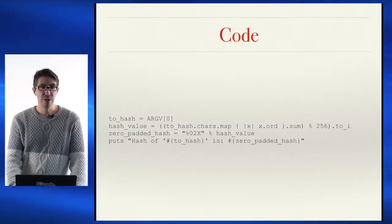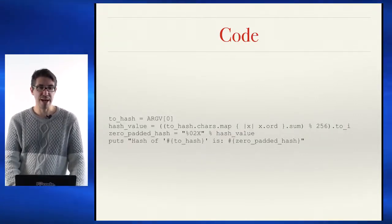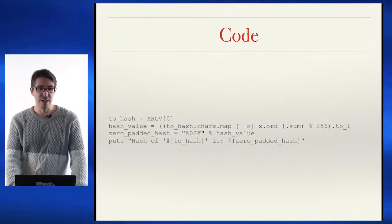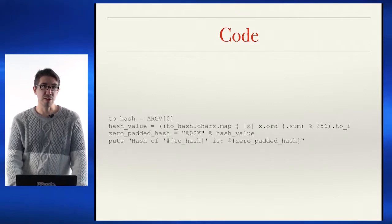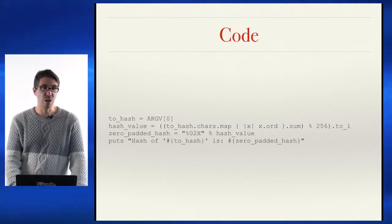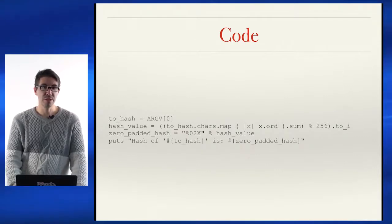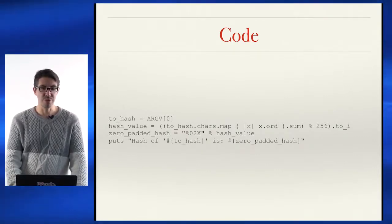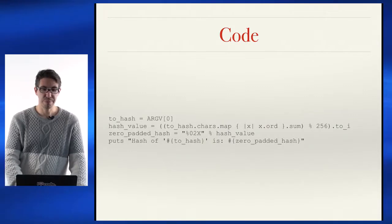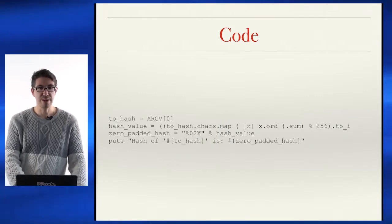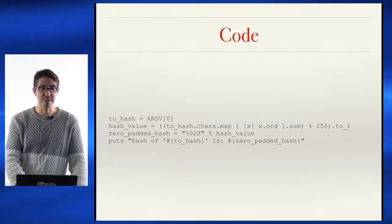If you're interested, here's the code for bad hash — it's in Ruby. It simply accepts the argument from the command line, converts all of the characters to their ASCII values, sums them up, and returns the result modulo 256 and prints it out in hexadecimal.